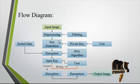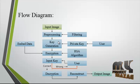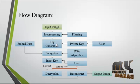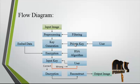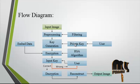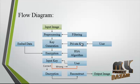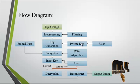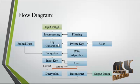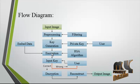After pre-processing, key generation is undertaken. Key generation produces the private key using the RSA algorithm. After key generation, the key is generated in a user-friendly manner so that the user can provide the input key for the encryption. The encryption is then undertaken using the RSA algorithm.